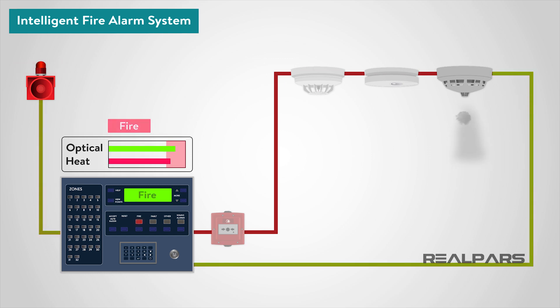Essentially, intelligent systems are far more complex, and incorporate far more facilities than conventional or addressable systems. Their primary purpose is to help prevent the occurrence of false alarms.